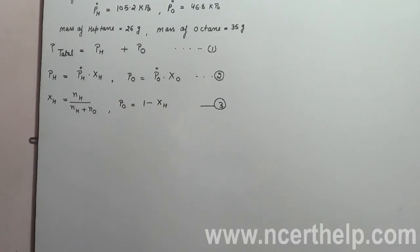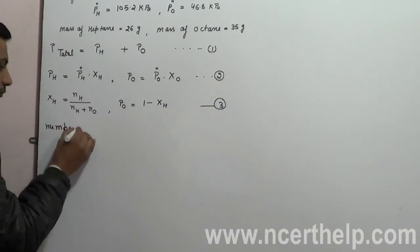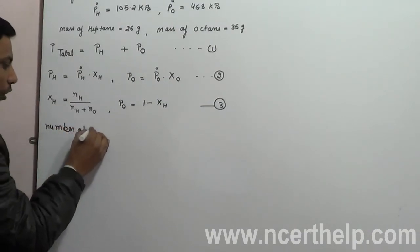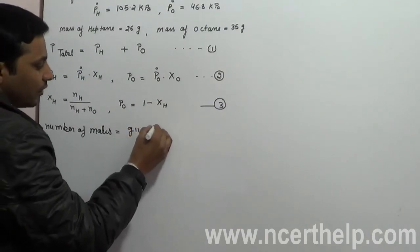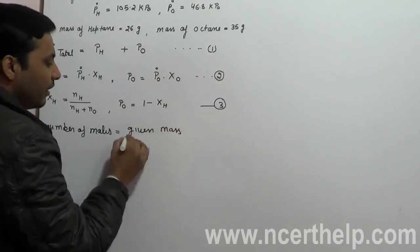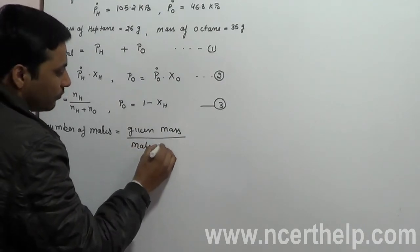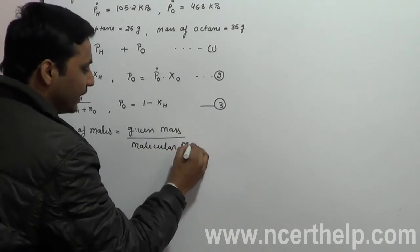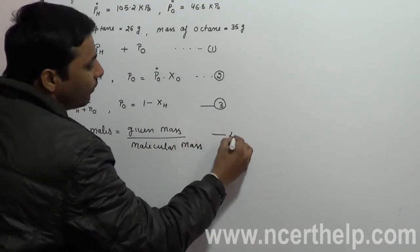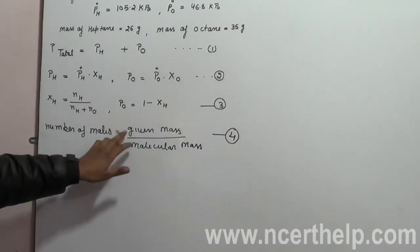Now we have to find the number of moles. The formula for number of moles is: number of moles equals given mass divided by the corresponding molecular mass (or molar mass — same thing). This is our fourth formula to be used.